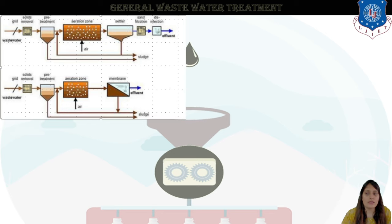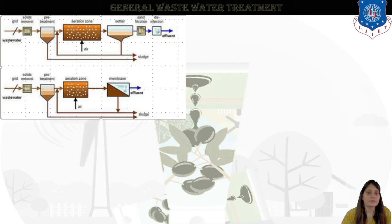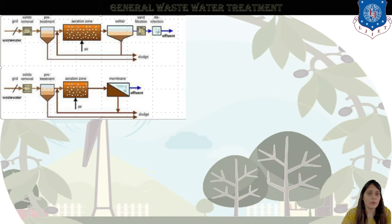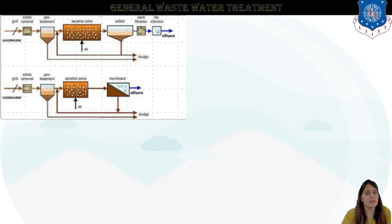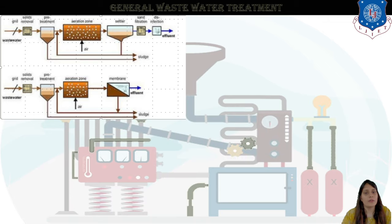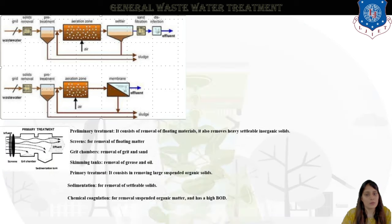In the secondary treatment, wastewater goes through solid removers in the aeration zone and we provide a membrane — water will pass through that membrane and the effluent is removed. This is the general wastewater treatment process. Here I have shown both the primary and secondary wastewater treatment figures.